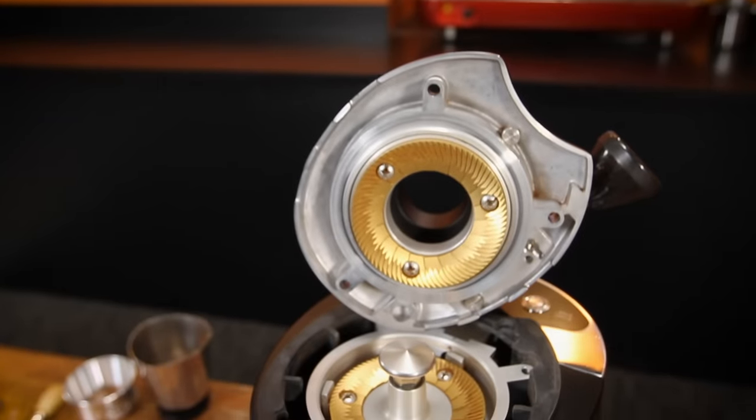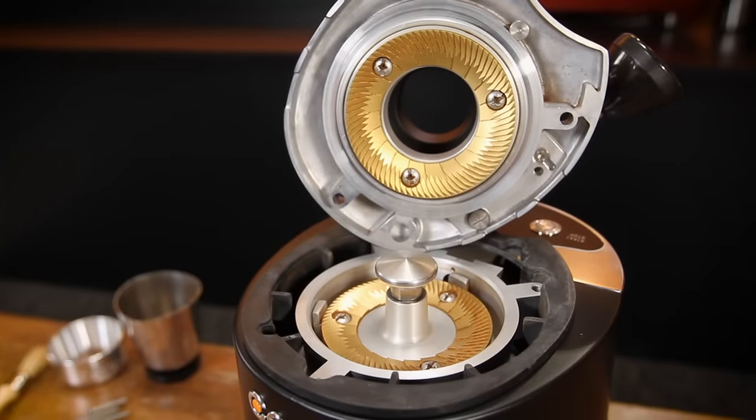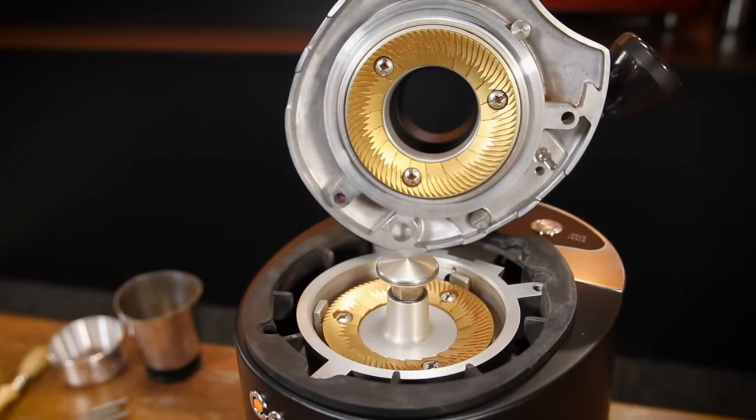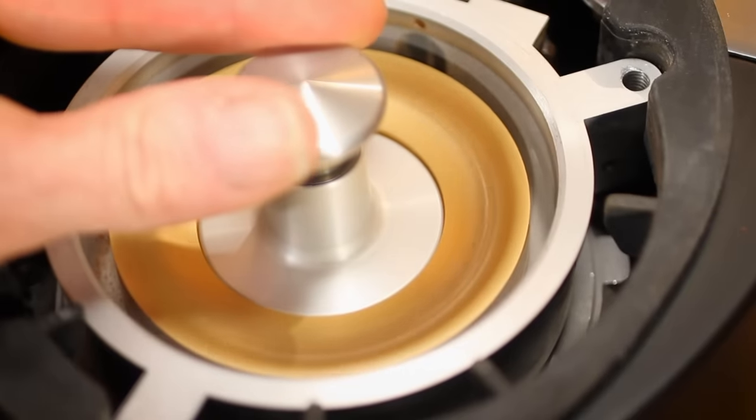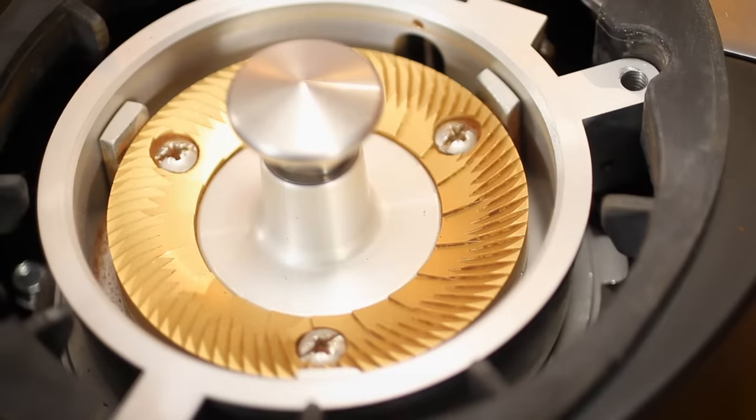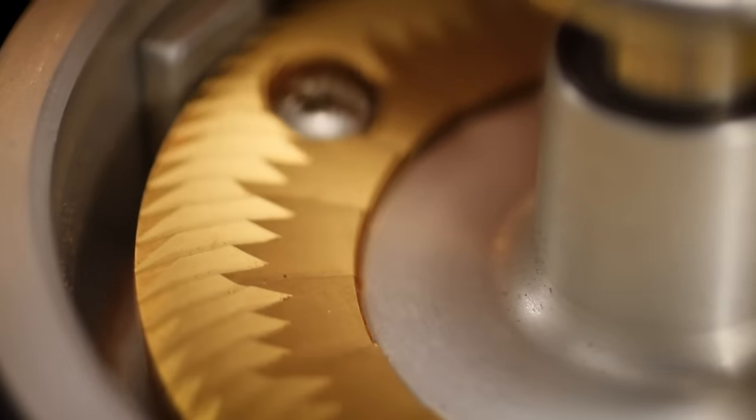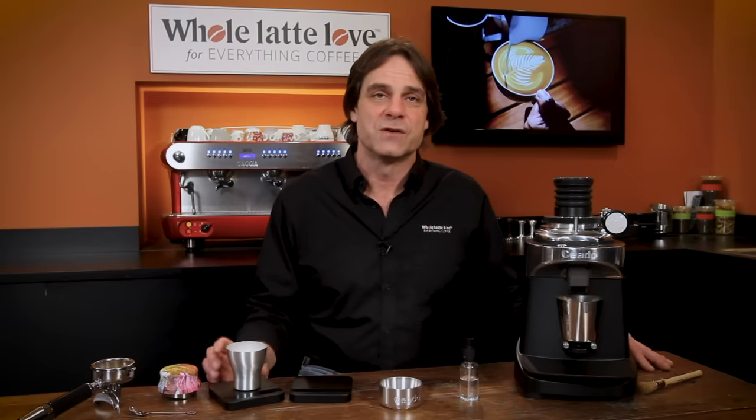Inside the E37 SD are these massive 83 millimeter titanium burrs. Now in most grinders you get a steel burr. Titanium gets you a much longer lifespan, typically three times longer than steel burrs. It's a burr which stays sharper longer and it will not rust. As we'll learn in a moment, no corrosion is important due to the way this grinder is used.